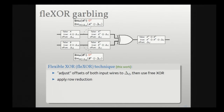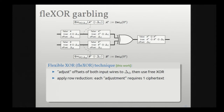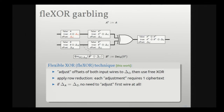By choosing A* and B* so that the first ciphertext in each pair is all zeros, I'm now only giving you two ciphertexts to garble this XOR gate. Furthermore, if one input wire already has the offset needed for the output wire, I don't need to include any ciphertexts for that wire at all. If all three original offsets are the same, I don't have to give you any ciphertexts — the construction collapses to free XOR in that case.